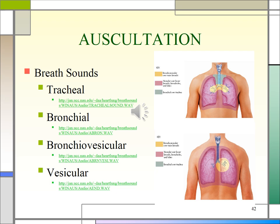Tracheal breath sounds are very loud, harsh, and high-pitched; inspiration is equal to expiration. They're found over the trachea and might be heard in other areas if there is pneumonia, atelectasis, or fluid infiltration. Bronchial sounds are loud and high-pitched, with a short silence between inspiratory and expiratory sounds; expiratory sounds last longer than inspiratory. They're heard over the manubrium and next to the trachea — if heard elsewhere, the cause is consolidation such as pneumonia, atelectasis, or fluid infiltration. Bronchovesicular sounds are heard over the first and second interspaces between the scapula; they're medium intensity and pitch, with inspiratory and expiratory sounds about equal — differences are easier to detect in the expiratory phase. Vesicular sounds are heard over most of the lung parenchyma — soft and low-pitched, with inspiration greater than expiration.